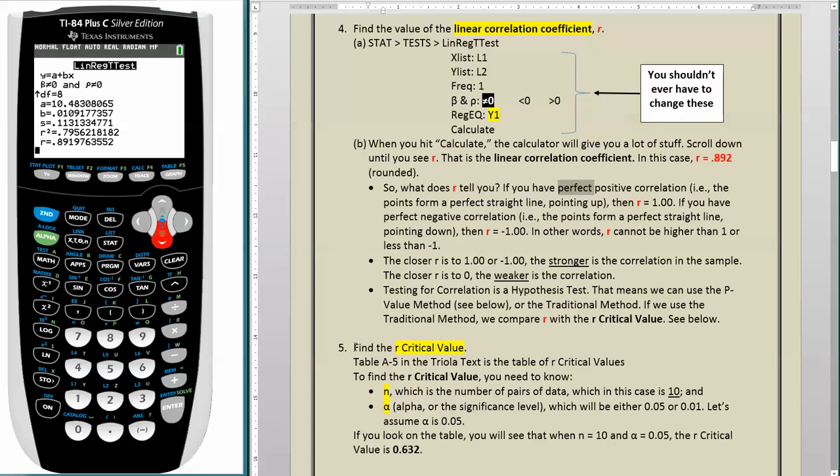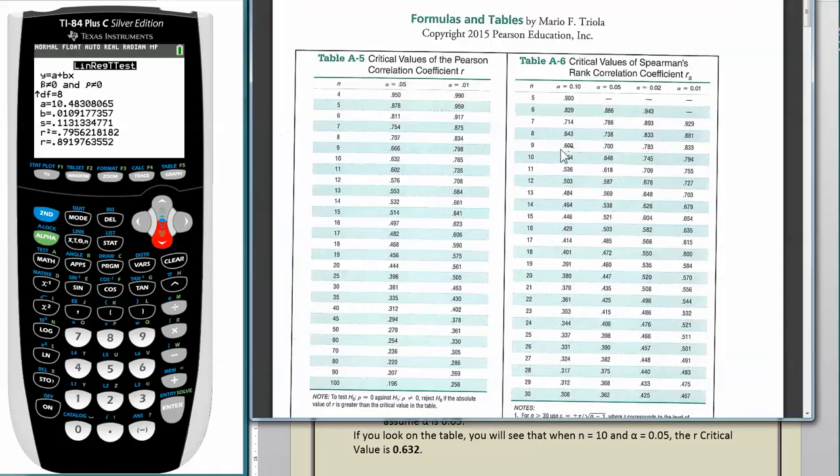So here we go, number 5. Find the R critical value. Table A5 in the Triola textbook is the table of R critical values. To find the R critical value, you need to know N, which is simply the number of pairs of data, which in this case is 10, and you need to know alpha, or the significance level, which will be either 0.05 or 0.01. Let's assume that alpha is 0.05. If you look on the table, you will see that when N equals 10 and alpha equals 0.05, the R critical value is 0.632.